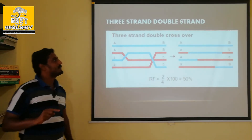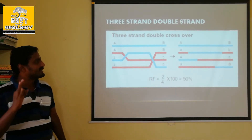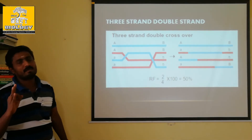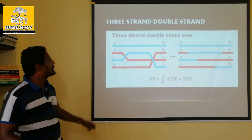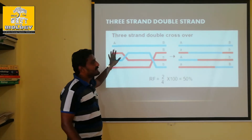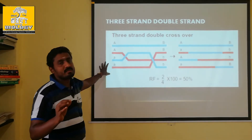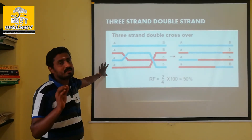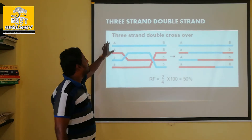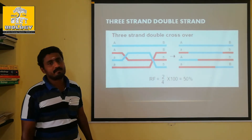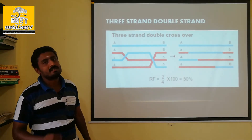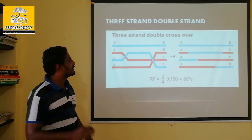Three strand double crossing over. Three types of chiasmata are formed — three chiasmata are formed within the same crossing over process. That is why it is called three strand double crossing over.